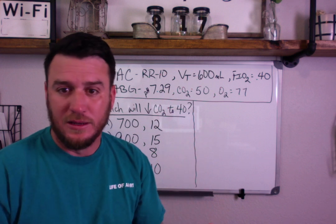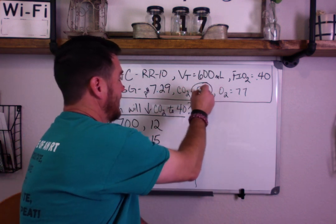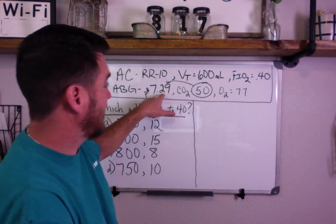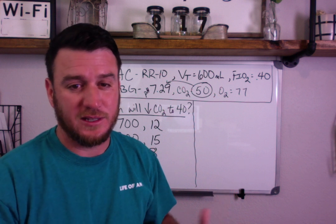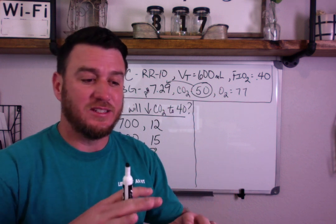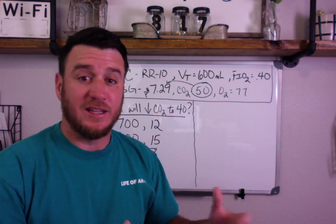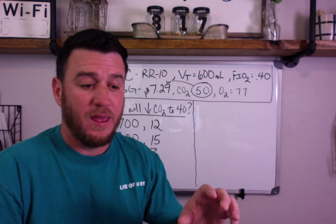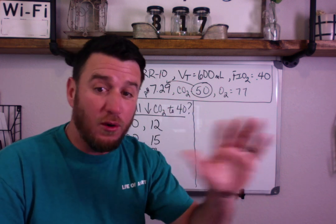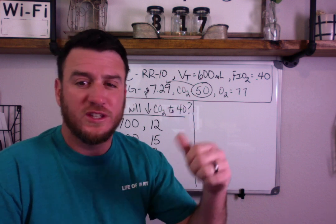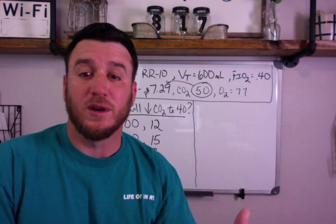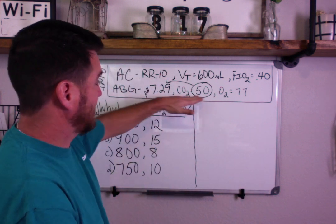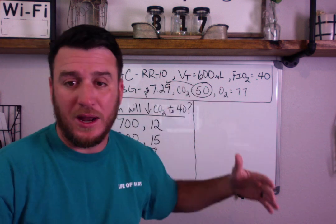Right off the bat you should think: the high CO2 is causing the acidotic pH. They also gave a bicarb of 27 with a base excess of plus three — that's distracting information. The FiO2 of 40% is also a distractor. You've got to recognize what's a distractor and what's important. When I see a CO2 of 50 and an acidotic pH, I know they're going to ask how to fix the CO2.